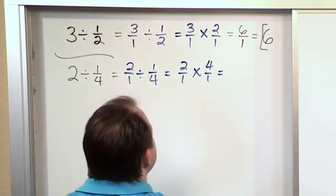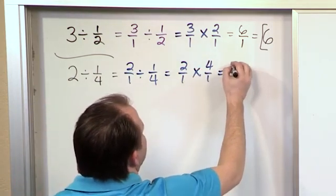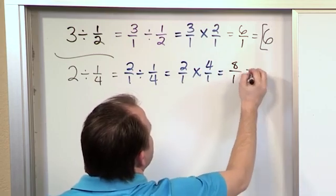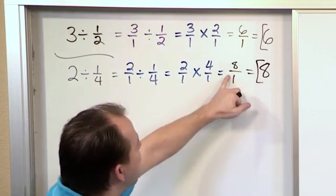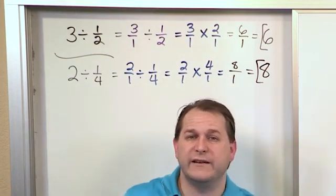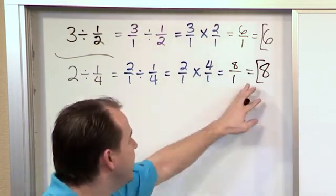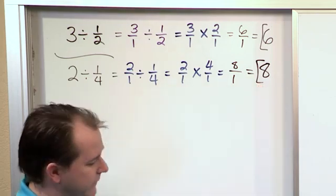And then 2 times 4 is 8 on the top. Multiply the tops. 1 times 1 is 1. And we know anything over 1 is just the top number because fractions are also division. So 8 divided by 1 is just 8. And so we get the answer 8 right there.